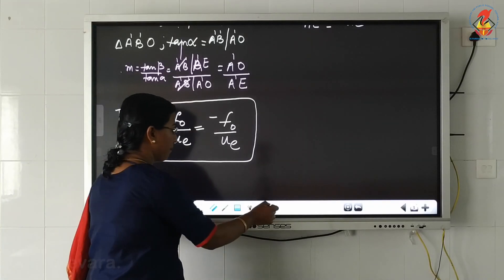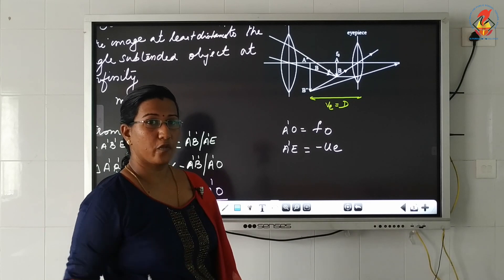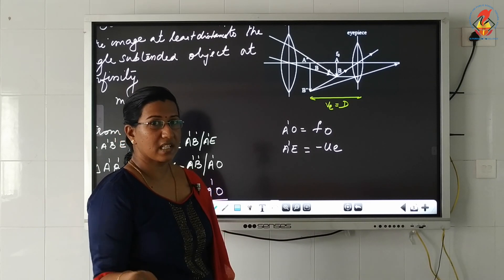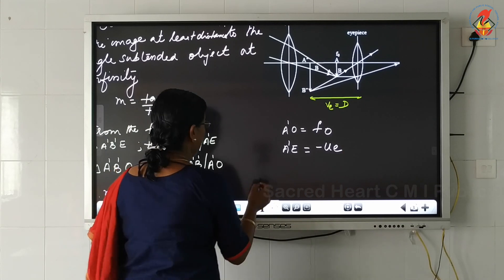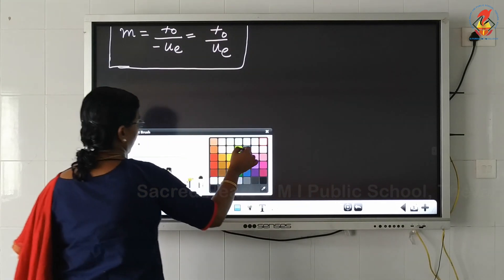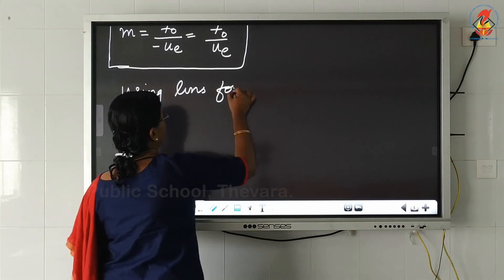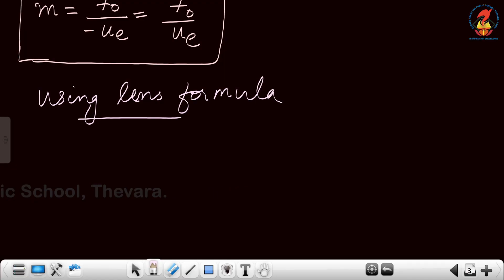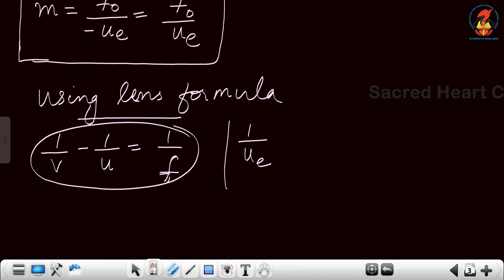But UE lies between the two lenses, which are placed at the ends of the sliding tube, making it difficult to find its value directly. So we are going to convert UE into terms we can easily find. For that we use the lens formula. What is the lens formula? It is 1/V minus 1/U equals 1/F. We want to find out 1/UE, that is the object distance of the eyepiece, so every term must be converted into terms of the eyepiece.